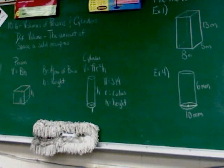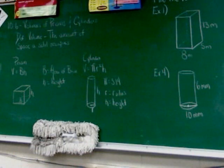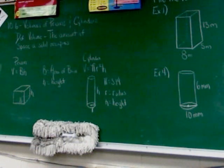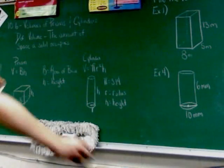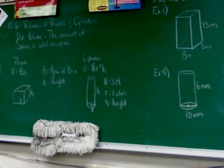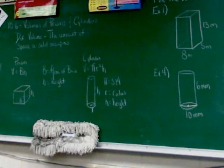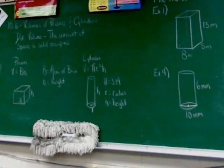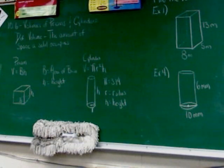Again: prism volume equals B times H, area of base times height. Cylinder: pi R squared H, where pi equals 3.14, R equals the radius, and H equals the height. The examples are set up just like they have been throughout these sections. Top of the board has the prisms, bottom of the board has the cylinders, and example 6 uses both in a comparison.